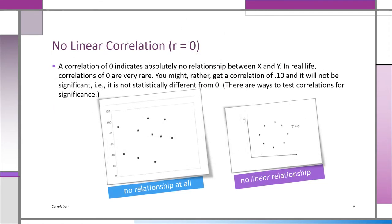What does an R of zero mean? Generally you don't get exactly zero—it means there's no linear relationship between X and Y. Look at the two scatter plots: one shows a perfect circle (R is zero because there's no linear relationship), and the other shows random points with no relationship. If you take random numbers and compute R, chances are it won't be exactly zero—it might be 0.02 or 0.03. In more advanced courses you learn to test whether R is statistically different from zero. In the real world, you might see a very low R that is not statistically different from zero.